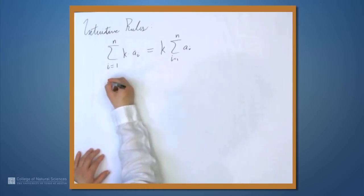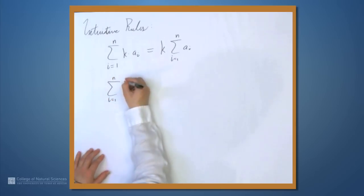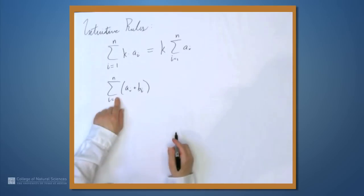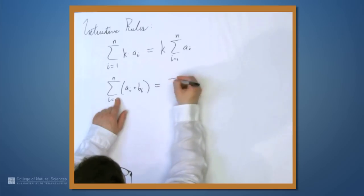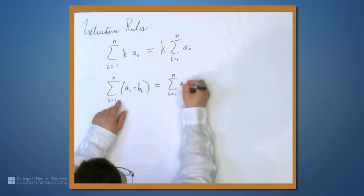And similarly, if we have the sum from i equals 1 to n of a sub i plus b sub i, this equals the sum from i equals 1 to n of a sub i plus the sum from i equals 1 to n of b sub i.